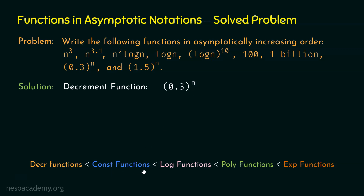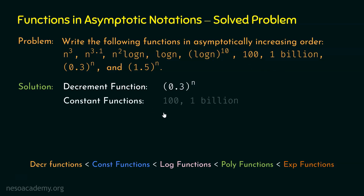Next, we identify constant functions. We have two: 100 and 1 billion. These are constant functions because they are not dependent upon the size of the input or the value of n.